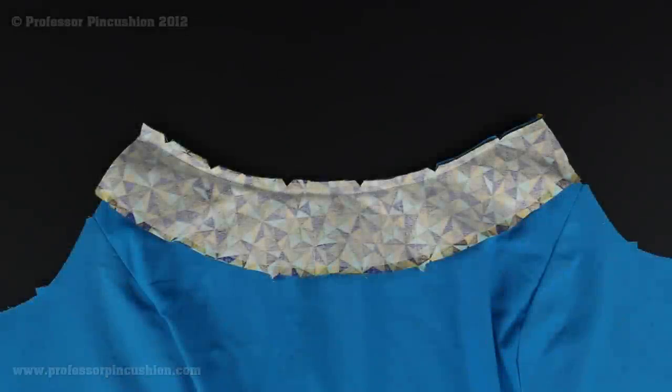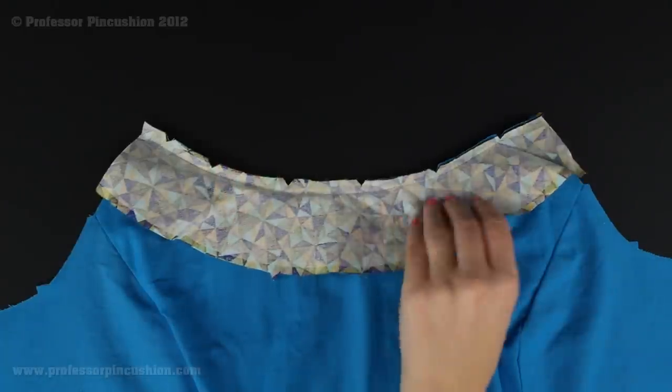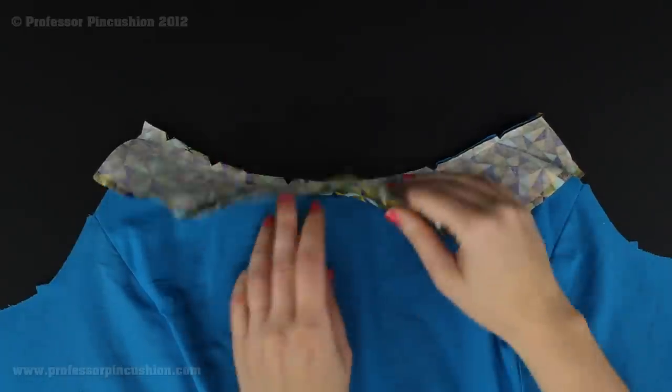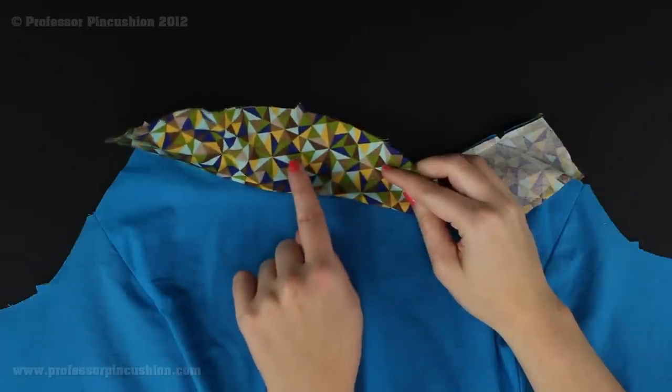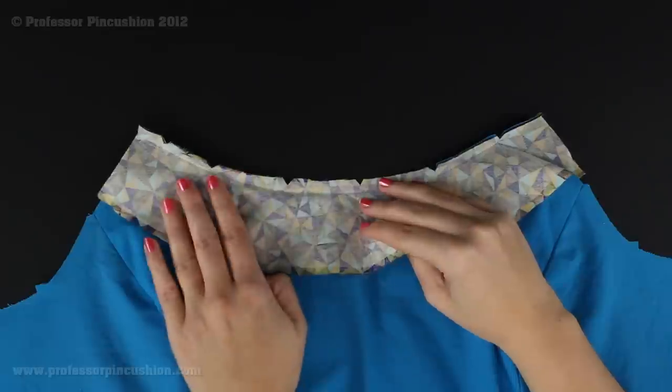So let's get started. You're normally going to do an understitch when you're applying facing to your garment, such as in the neckline and armhole. So here I have my facing, and I did it in a different color. It's the print, so it stands out a little bit from my blue bodice here and it's a lot easier to explain.